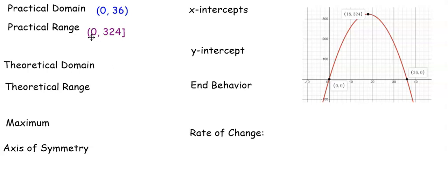So anything greater than 0 and less than or equal to 324. The theoretical domain are x values that work for this function that has the equation f of x equals x times 36 minus x.